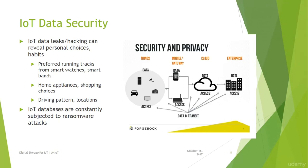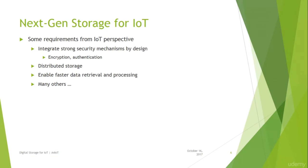If data in transit is not properly encrypted and the channel is not secure, IoT data leaks and hacking become very common and can reveal personal choices and habits — such as preferred running tracks, home appliance usage, shopping choices, driving patterns, and locations. IoT databases are also constantly subjected to ransomware attacks. Next-generation storage for IoT must integrate strong security mechanisms by design, including encryption, strong authentication, and distributed storage for faster data retrieval and processing.